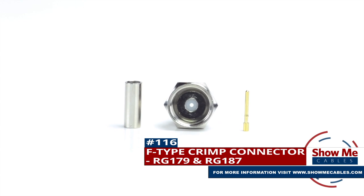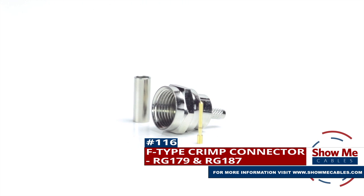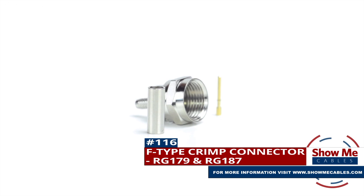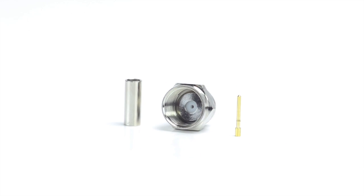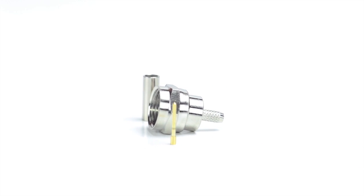Are you looking for a quick and easy DIY installation or repair for your coax cable? Our F-type crimp connector for RG179 and RG187 will provide a simple solution for your wiring needs.